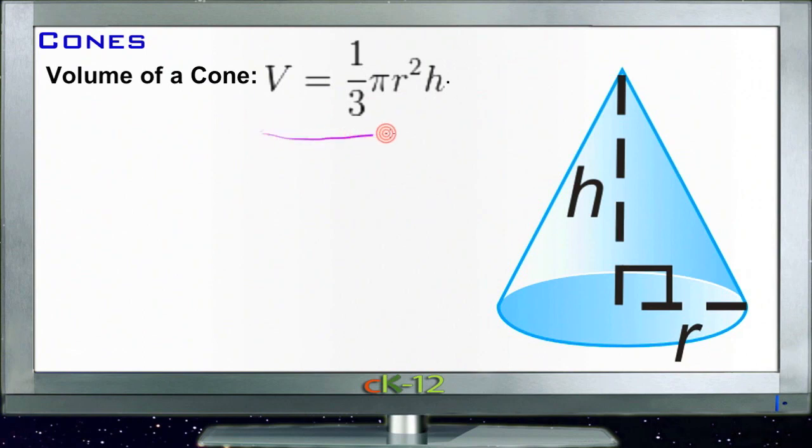Volume of a cone—if you watched the last lesson, you heard me mention that volume of the cone is the same process as for volume of a pyramid. It's just one-third the area of the base times the height. The only difference is that instead of finding the area of some polygonal base, we just find the area of a circle.